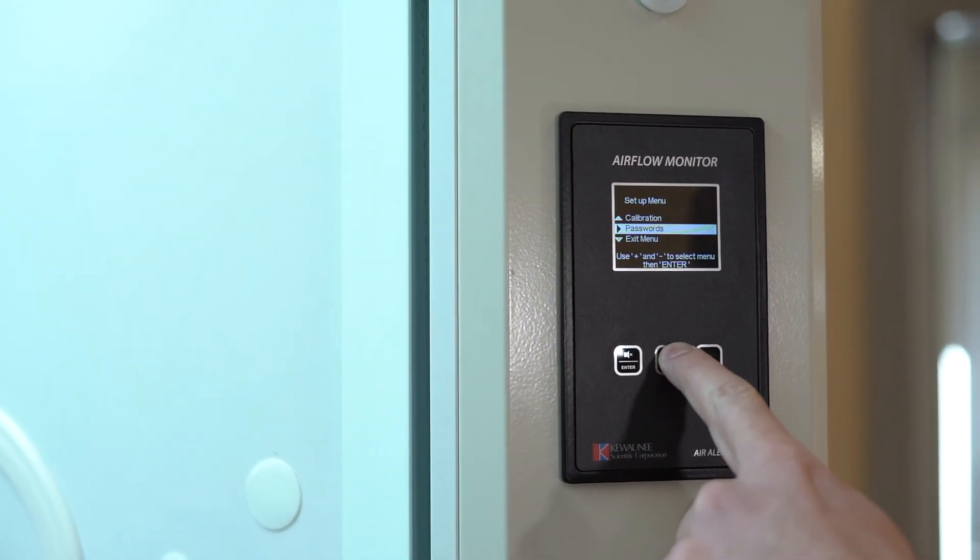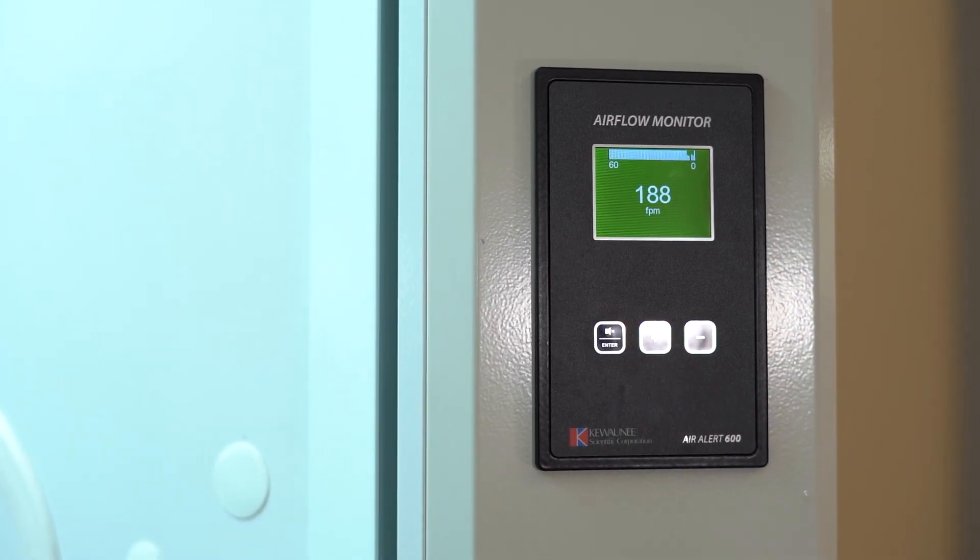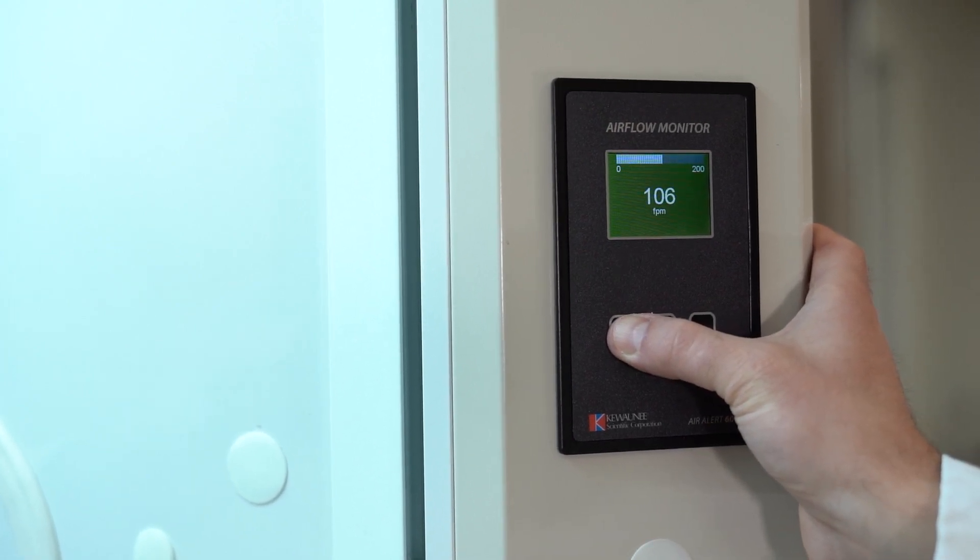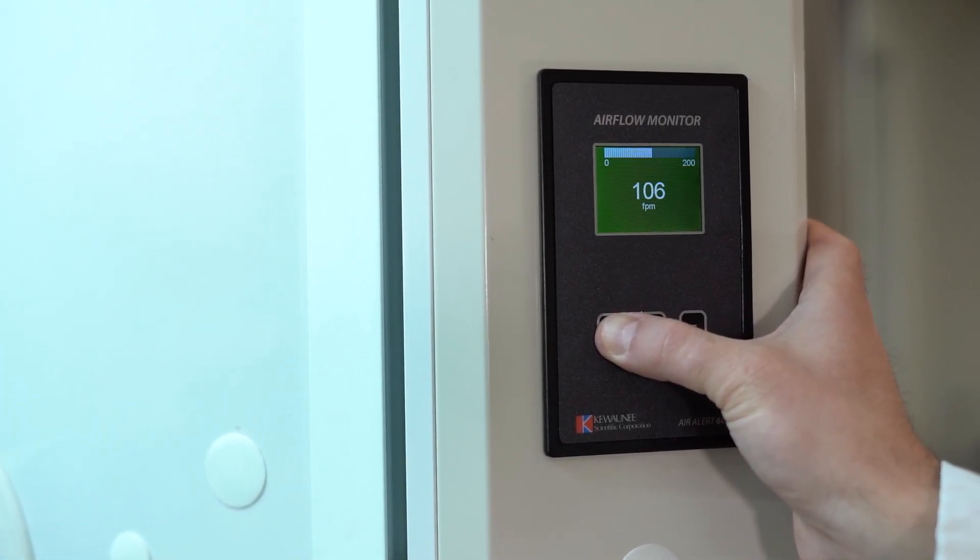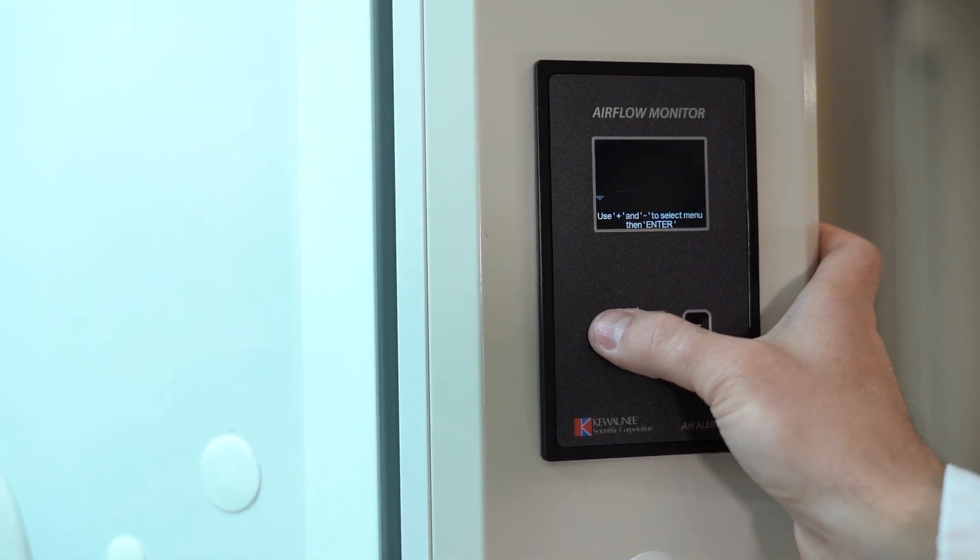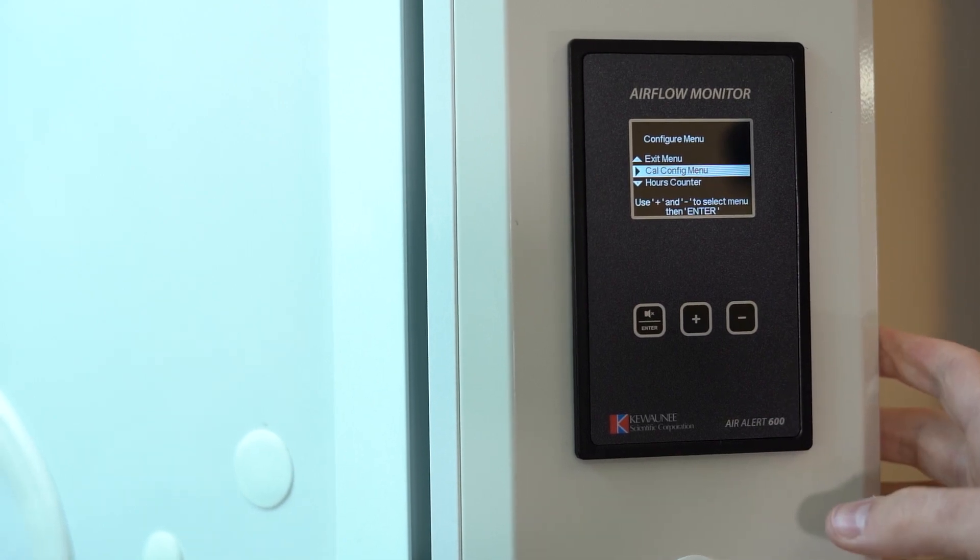Back out of the menus and select run in the main menu. Another common change is the face velocity set points for safe, warning, and fail states. These are found under the configure menu and the submenu called calconfig.